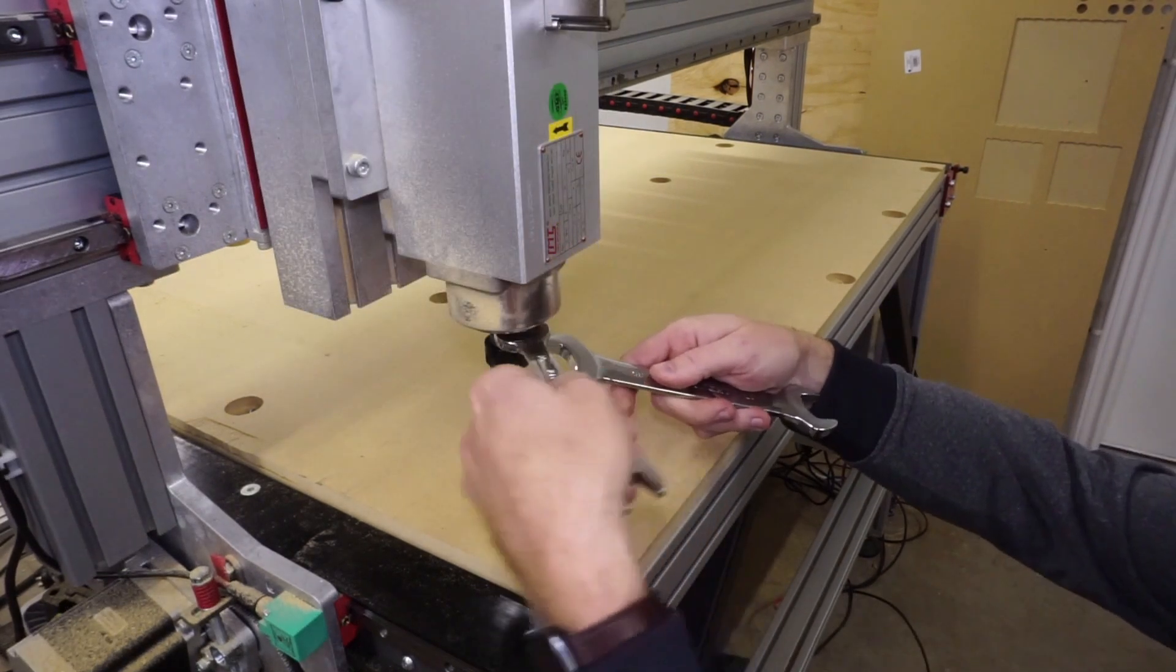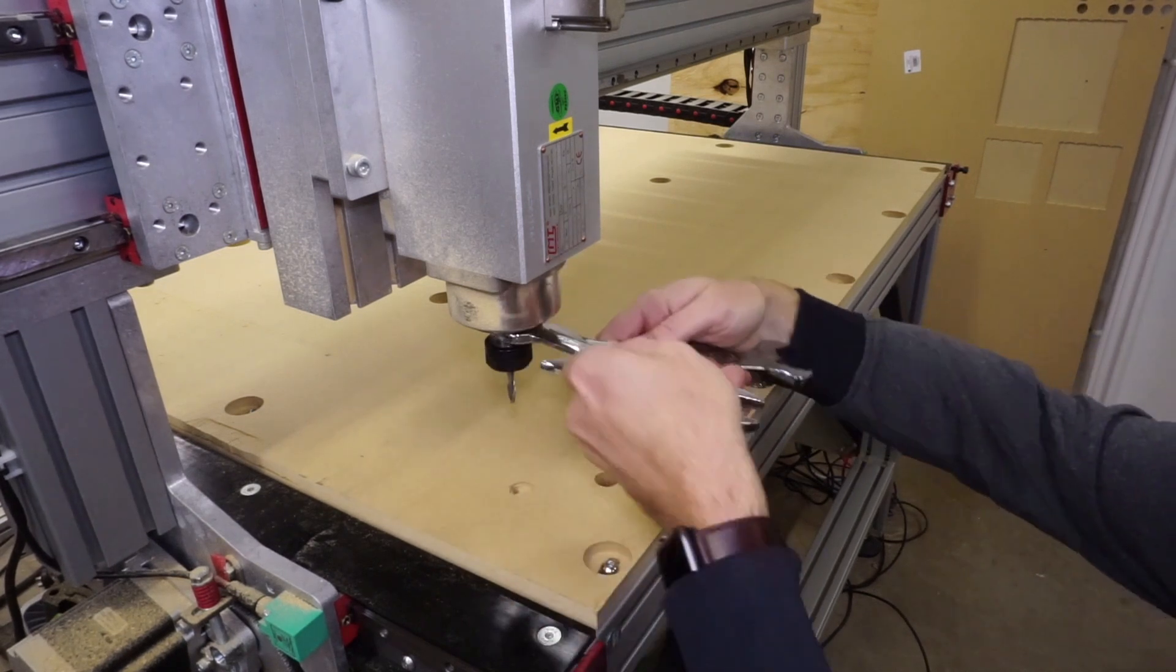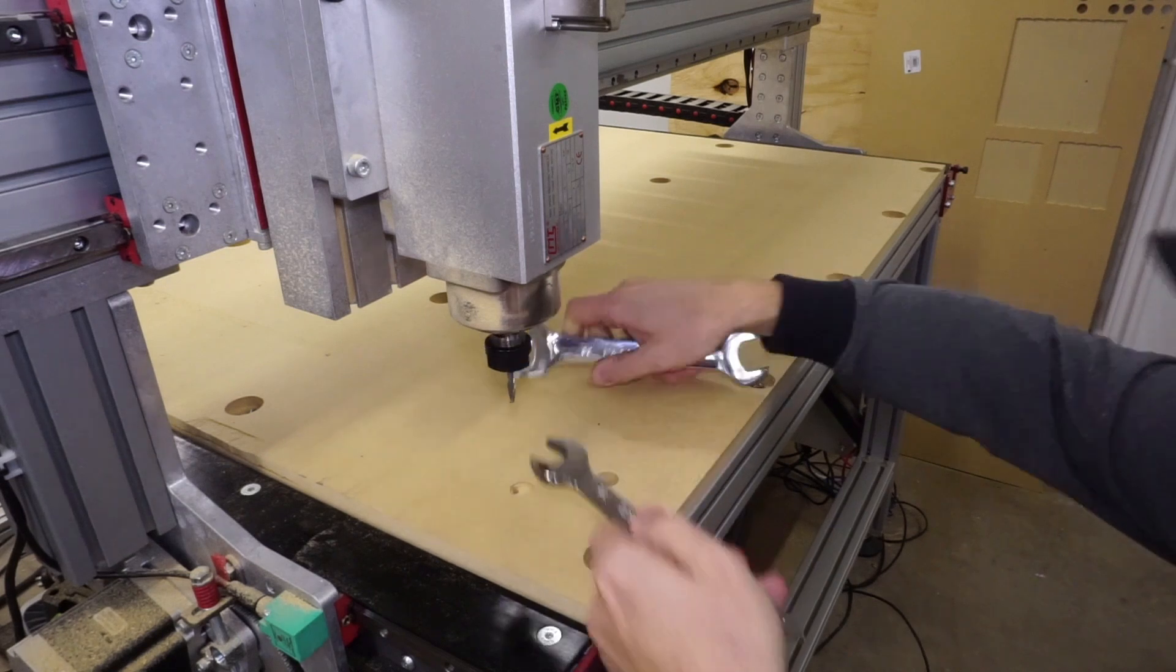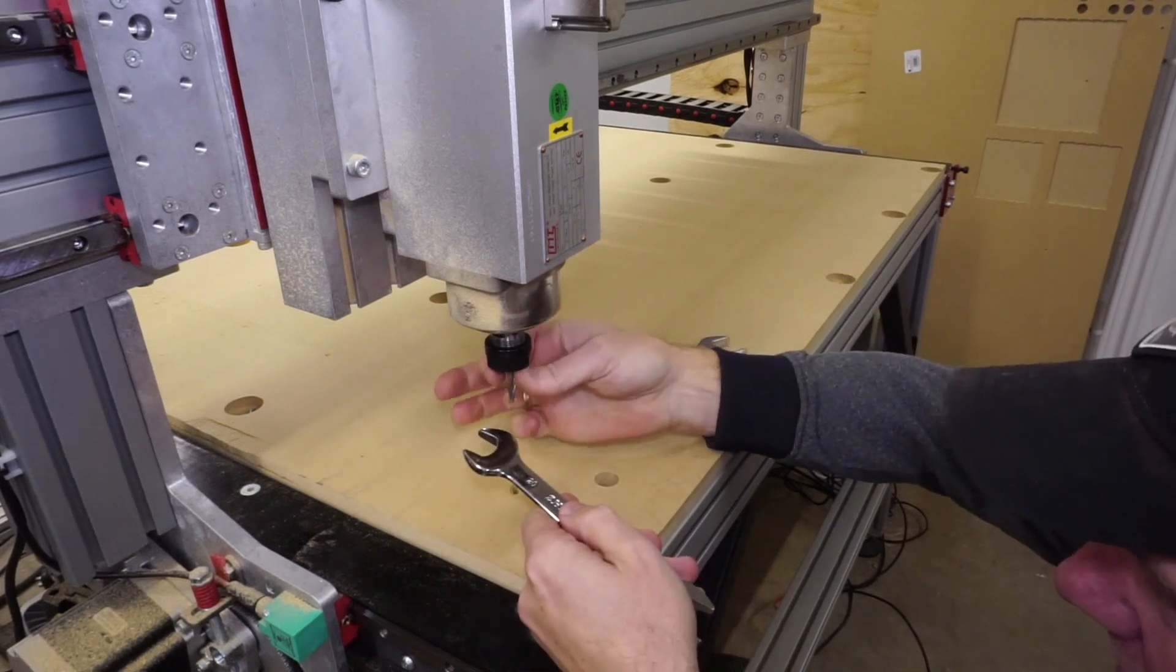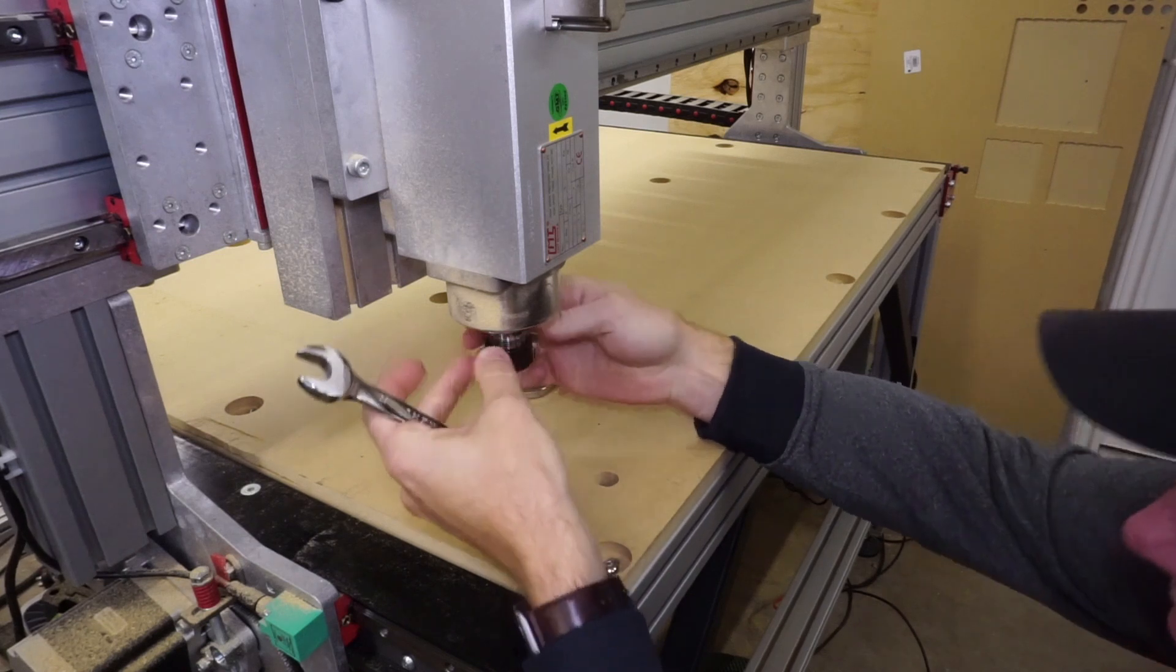Here I learned another lesson. Three quarter inch MDF board is attached to the CNC and I'm attempting to cut through it for the dog holes. The z-axis hit its lower stop and would not allow it to cut through. All I had to do was extend the bit about an eighth of an inch and that problem was solved.